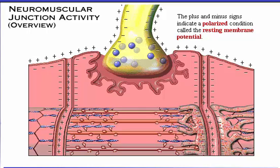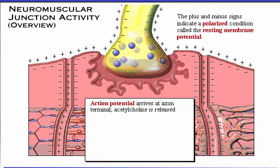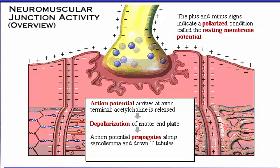The plus and minus signs on the axon terminal, sarcolemma, and T-tubules indicate a polarized condition called the resting membrane potential. Although plus and minus signs are not shown on the motor end plate, it is also polarized. Here's an overview of the activity that occurs at the neuromuscular junction: an action potential arriving at the axon terminal triggers the release of the neurotransmitter acetylcholine, resulting in the depolarization of the motor end plate. This depolarization triggers an action potential that propagates along the sarcolemma and down the T-tubules, causing contraction of the sarcomeres.